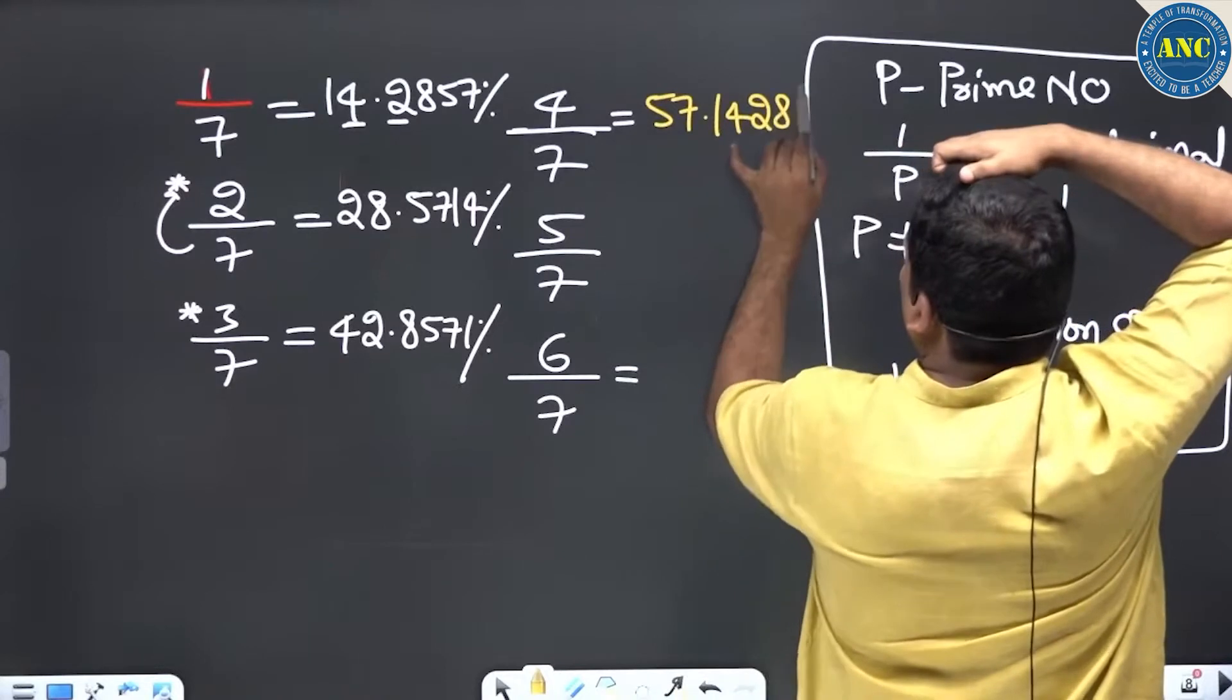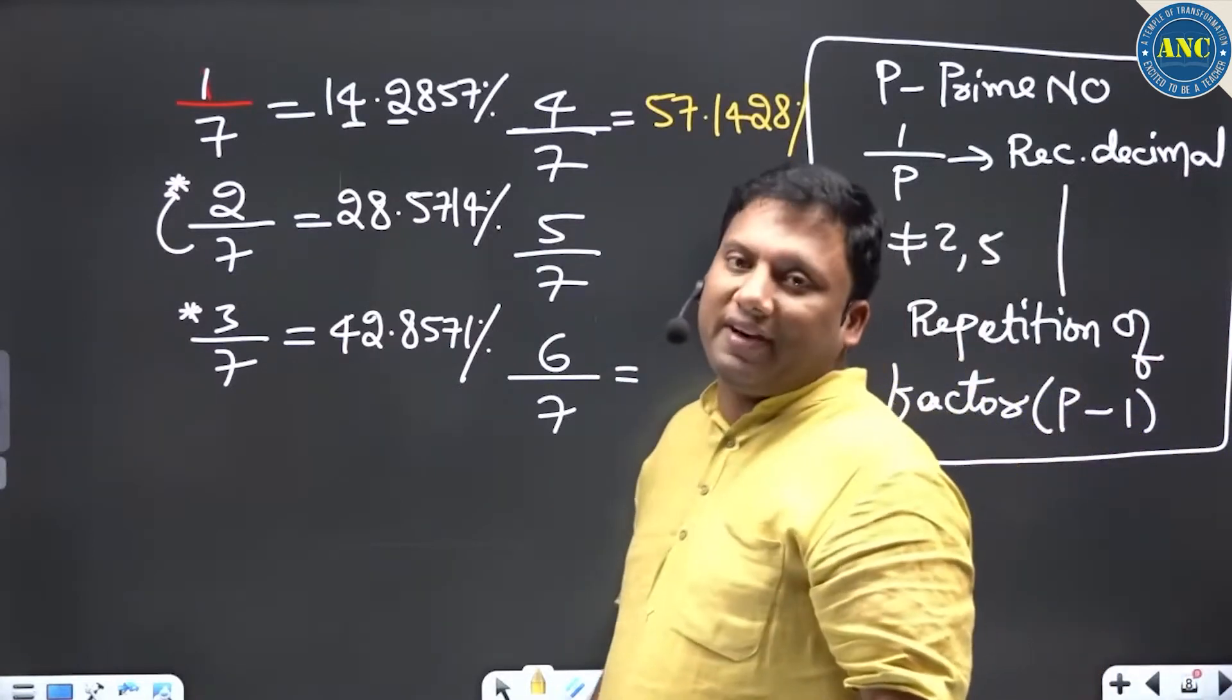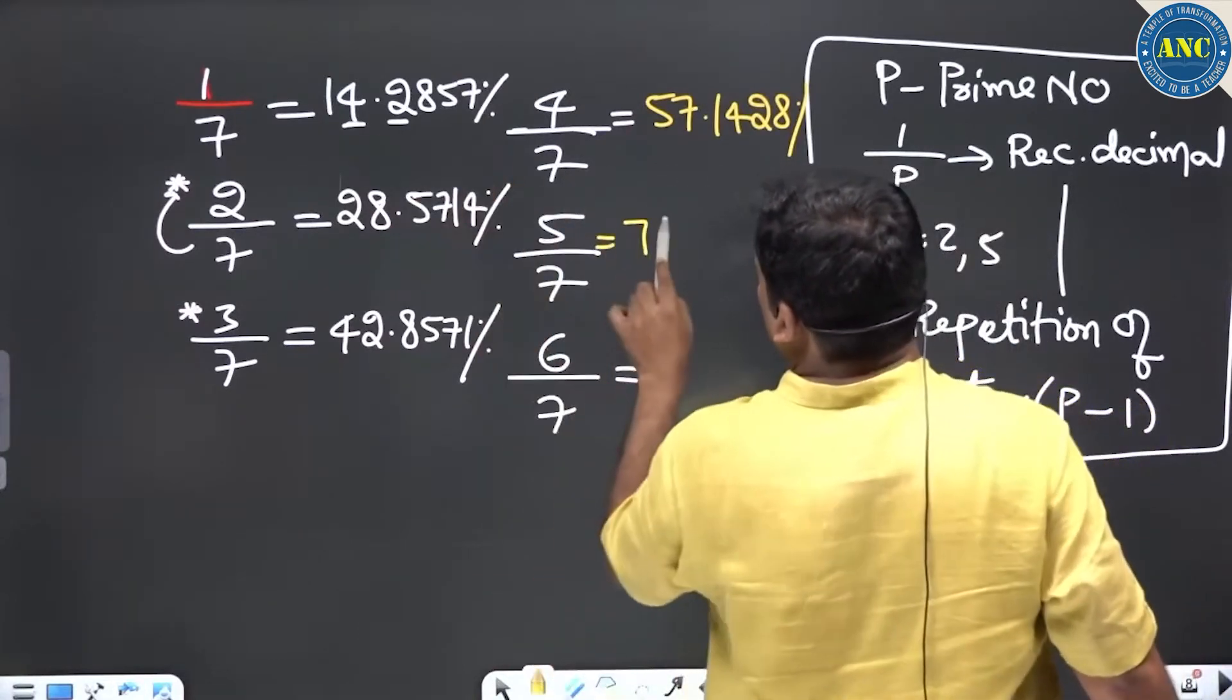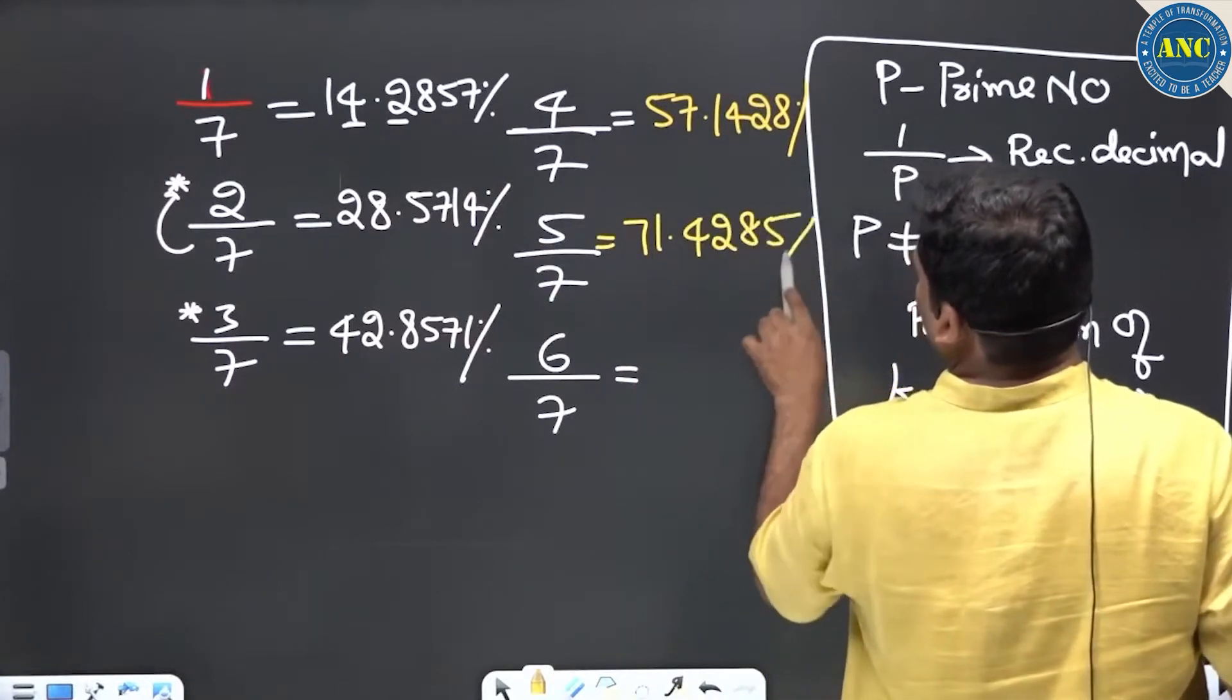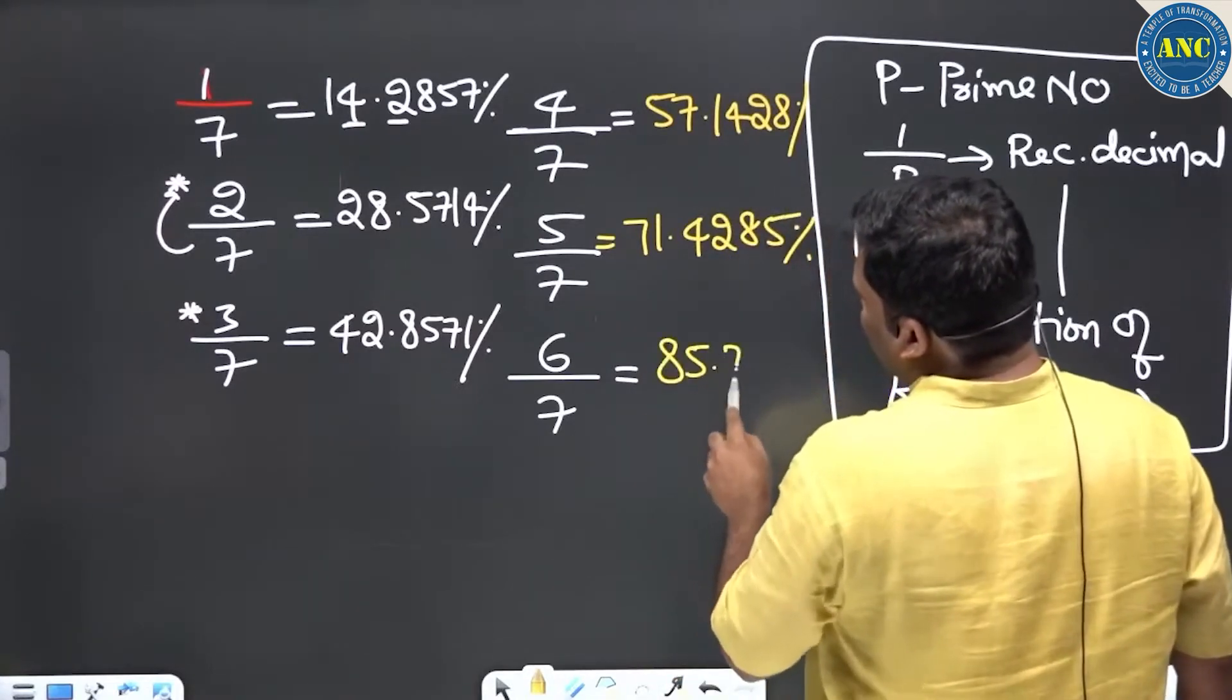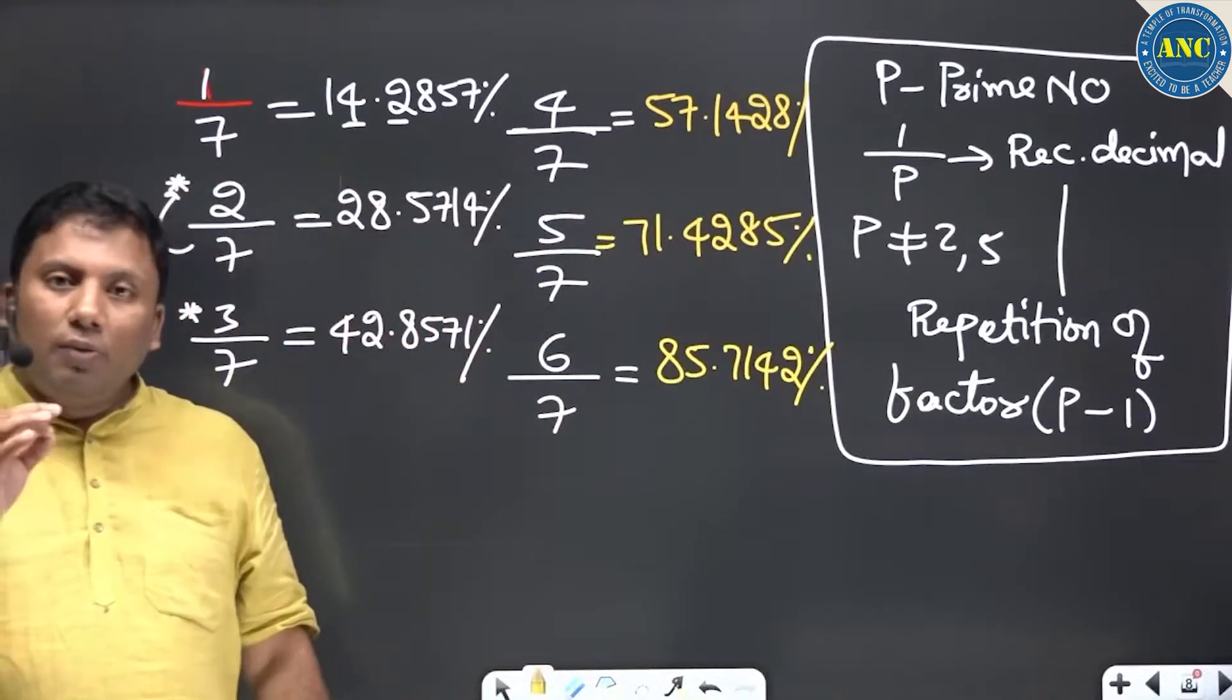5/7: take the numerator 5, multiply by 10. 5 tens are 50, 7 goes 7 times. Write the next digit in serial order: 71.4285. 6/7: 6 tens are 60, 7 goes 8 times. 85.7142. Are you all with me?